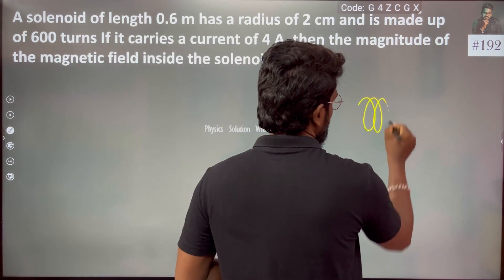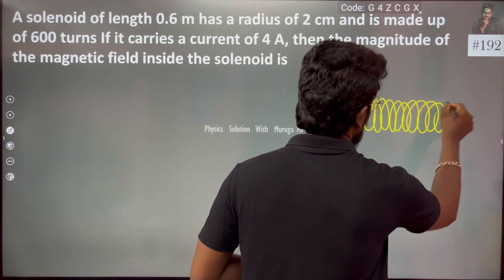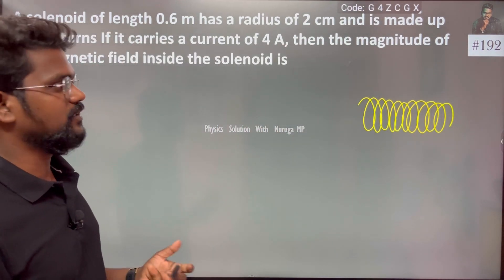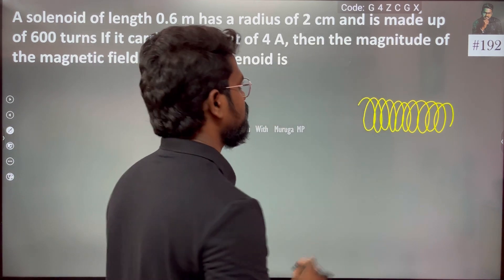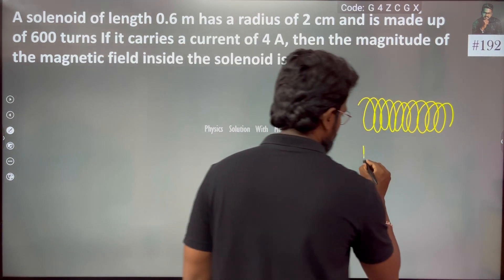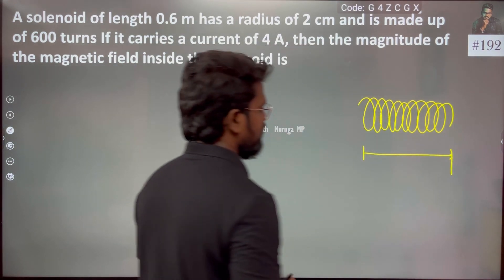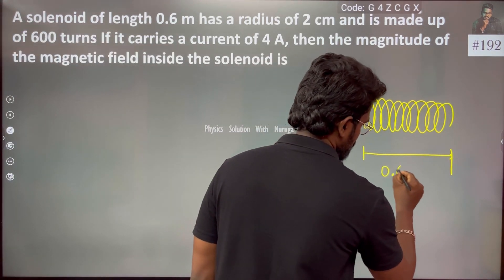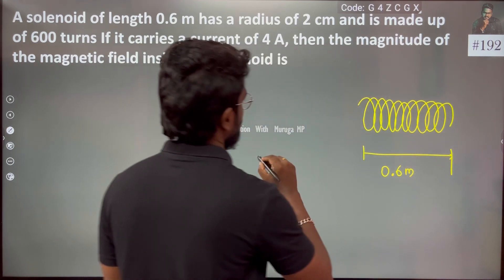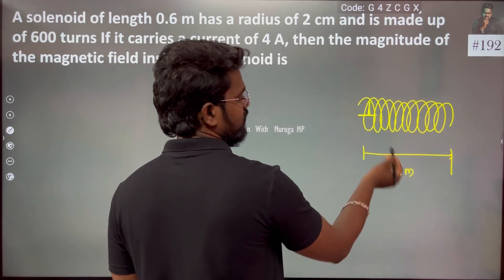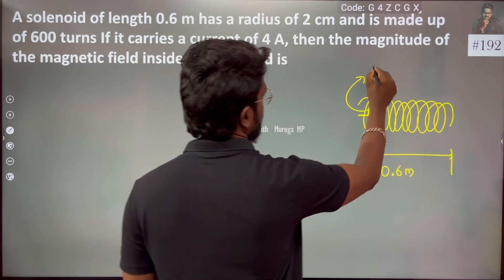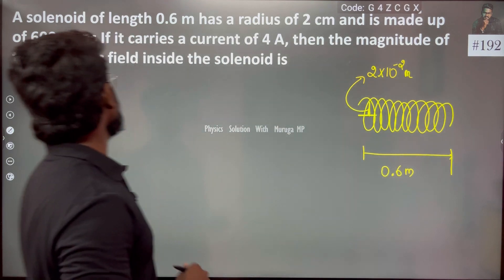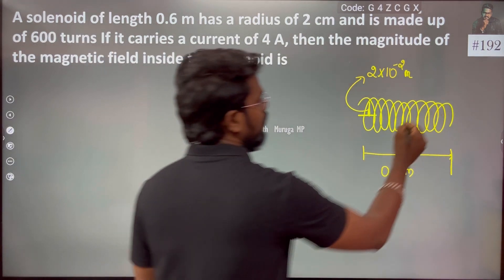A solenoid will have n number of turns, like a normal spring. We will have a length of 0.6 meter. The radius of this solenoid is 2 cm, that is 2 × 10^-2 meter. This is made up of 600 turns total.